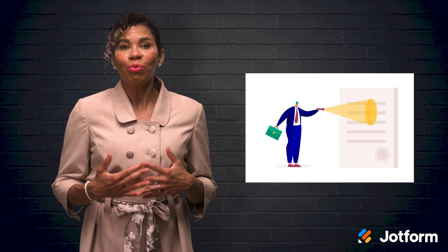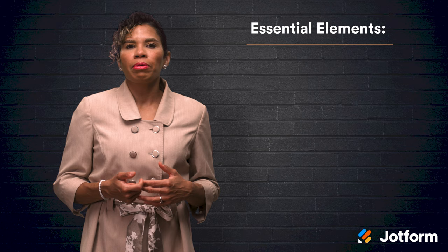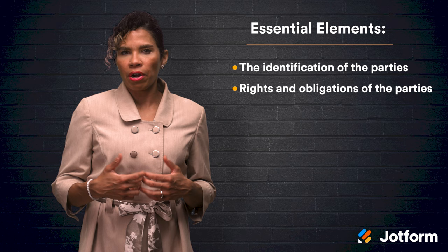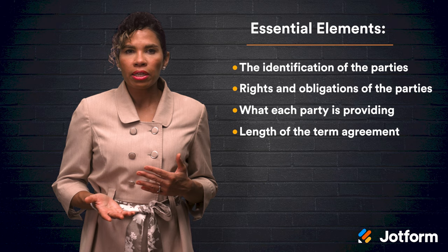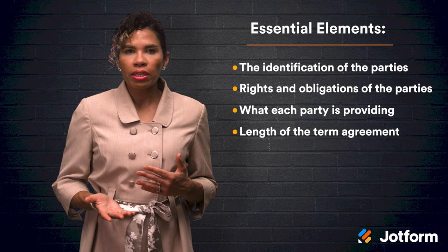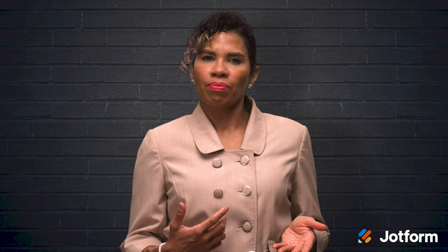Before we wrap up, let's recap. In order to create a valid contract, it must contain several elements: the identification of the parties, the rights and obligations of the parties, what each party is providing, the length of the term agreement, contract termination rights, obligations and rights if something goes wrong, and how you will resolve any disputes. I'm glad you could join us today. Again, I'm Jacqueline from JotForm, signing off.